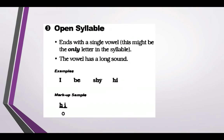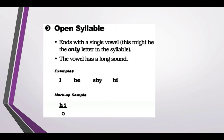Open syllables end with a single vowel — it might be the only vowel in the syllable. The vowel is going to have the long sound, like 'I,' 'be,' 'shy,' 'high.' When indicating this, you place a line above the letter making the long sound, and you use the letter O for open when coding the type of syllable.